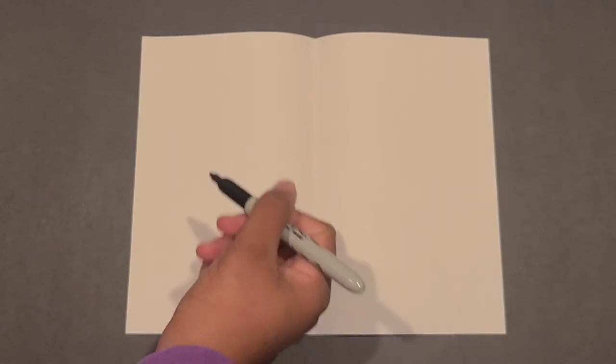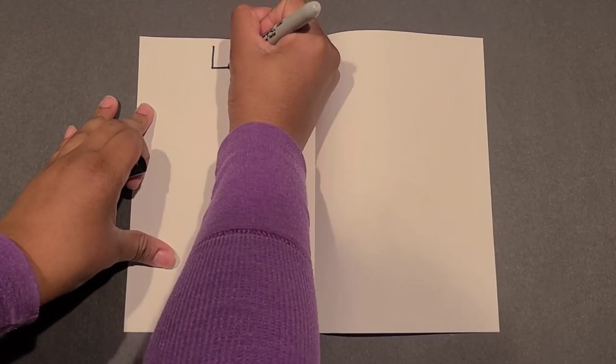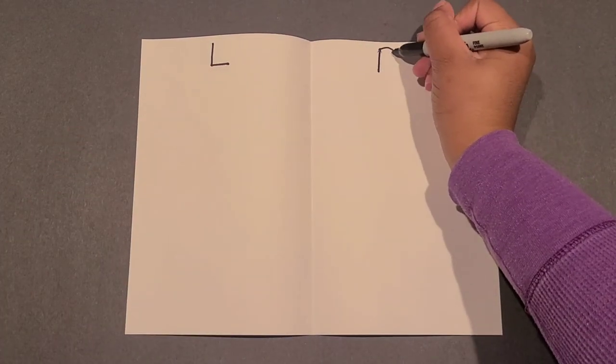Unfold the paper and grab your marker and write the letters L on the left side of the paper and R on the right side.